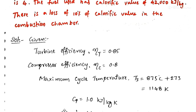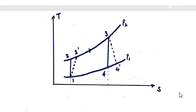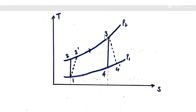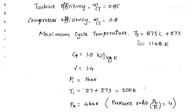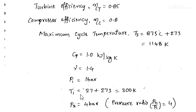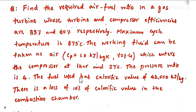For the maximum cycle temperature, observe the T-S diagram for the simple gas turbine considering the turbine and compressor isentropic efficiencies. In the cycle, T3 is the maximum temperature, which is given as 875 degrees centigrade, so T3 = 1148 K. Cp is 1.0 kJ/kg·K and gamma is 1.4. Air enters the compressor at P1 = 1 bar and T1 = 27 degrees centigrade, or 300 K. The pressure ratio is 4.